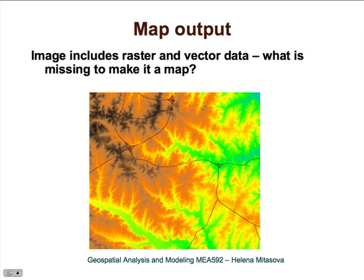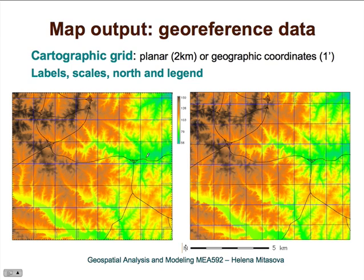Finally, we have displayed raster and vector data — but what is still missing to make it a map? It is the georeferencing information. Every map needs information about where the image is located on the surface of the Earth. We already talked about how that's done using geographic coordinates or projected coordinates, so we need to include some information about these coordinates.